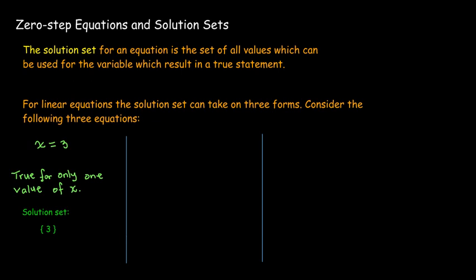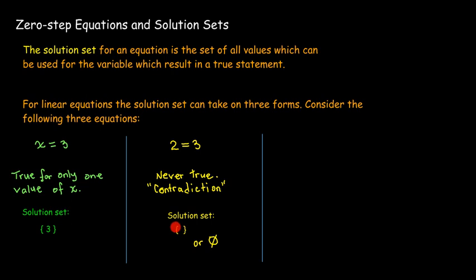Our second equation is not true: 2 does not equal 3. If I write 2 equals 3, that's a false statement, or what we call a contradiction. It's never true — there's no x here at all. It doesn't matter what the x value is or any other variable; 2 will never equal 3. In this case, we say that the solution set is empty, shown by either a pair of braces with nothing inside, or this circle with a line through it — another symbol for the empty set.